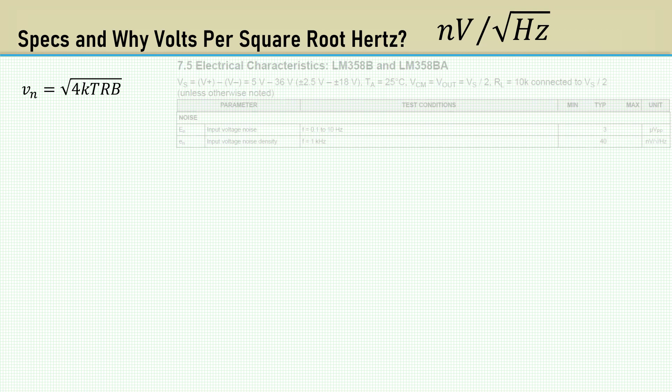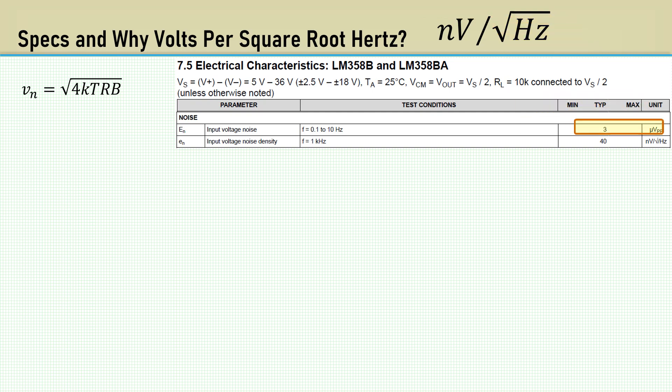Here is the input voltage noise density of the LM358. It is 40 nV per square root hertz. Note that is a voltage density. The goal is to determine the RMS voltage of our application within a specific bandwidth.